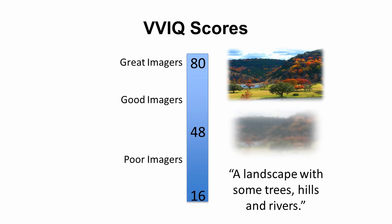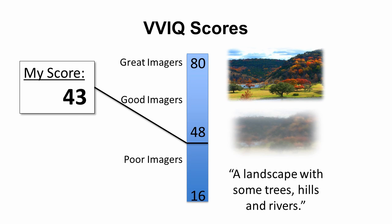Now that you've rated each of the sixteen mental images on a scale of one to five, add up your score — it will be out of 80. The closer you are to 80, the better your mental imagery; the minimum score is 16. If you're somewhere in the middle, that's fairly normal, as most people can create something like a mental image. Extreme low or high scores are unusual. The speaker's own score falls a little on the low end but still in the middle area.